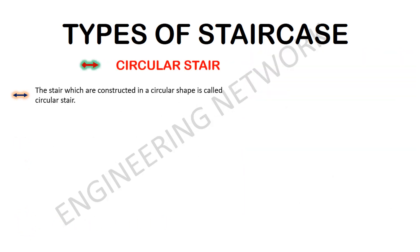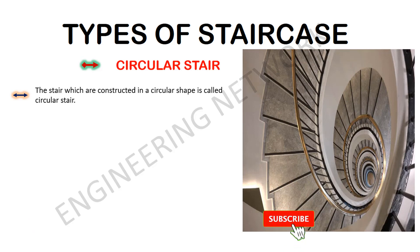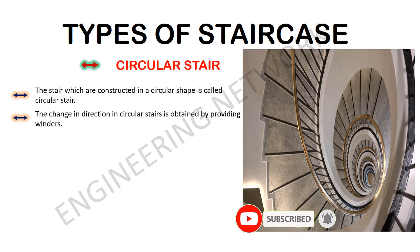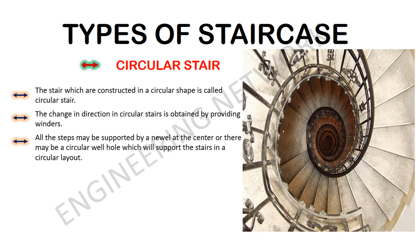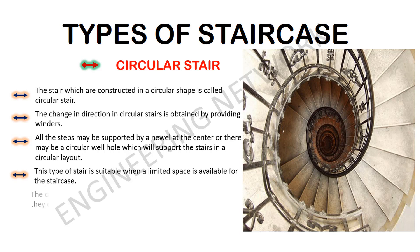The next type is the circular stair. The stair which is constructed in a circular shape is called a circular stair. The change in direction is obtained by providing winders. All the steps may be supported by a Newell at the center, or there may be a circular well hole which supports the stair in a circular layout. This type is suitable when limited space is available for the staircase. These stairs are generally constructed either of cast iron or RCC, and cast iron stairs are very suitable for back door entrances as they occupy very little space.